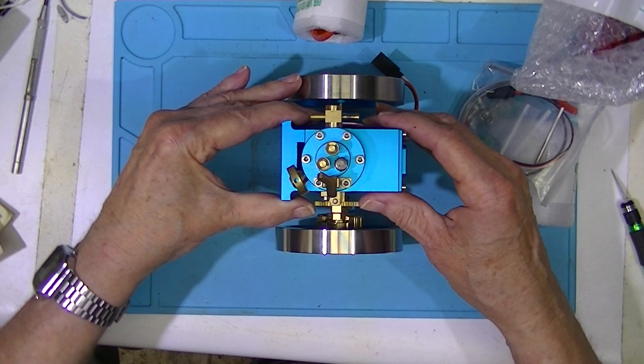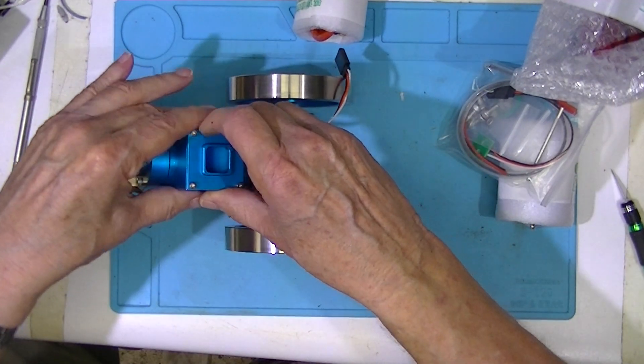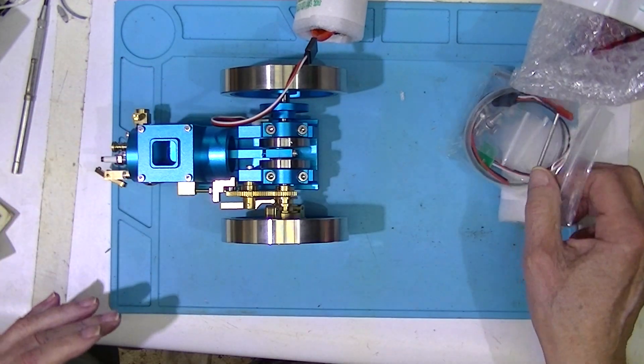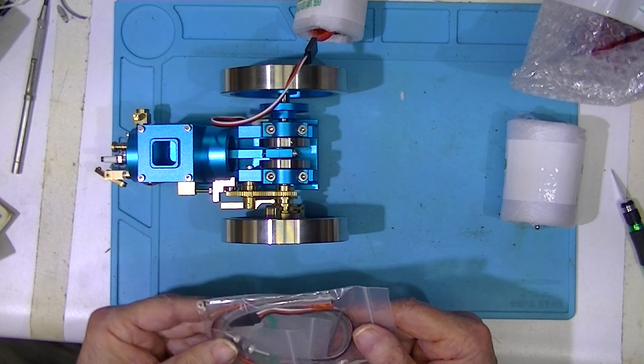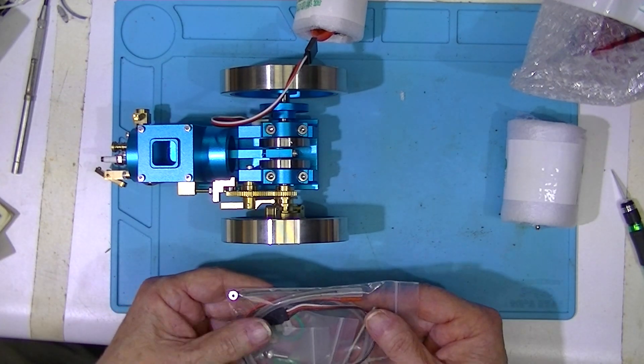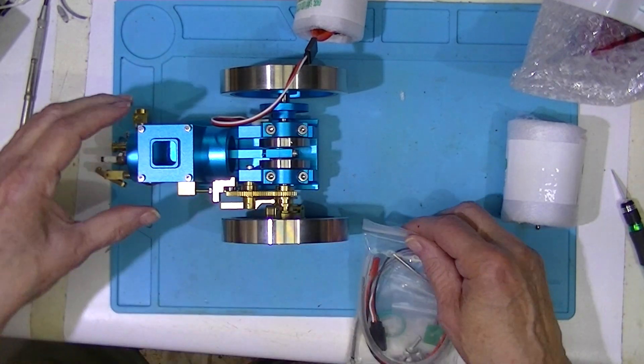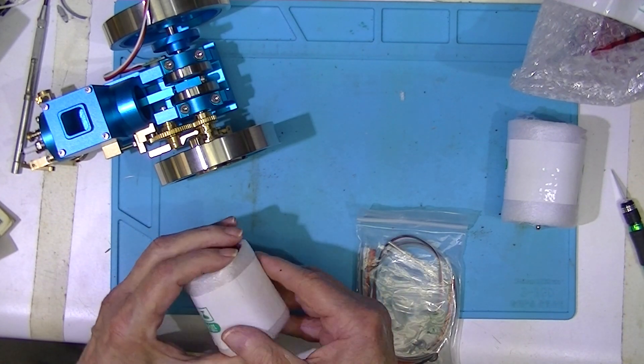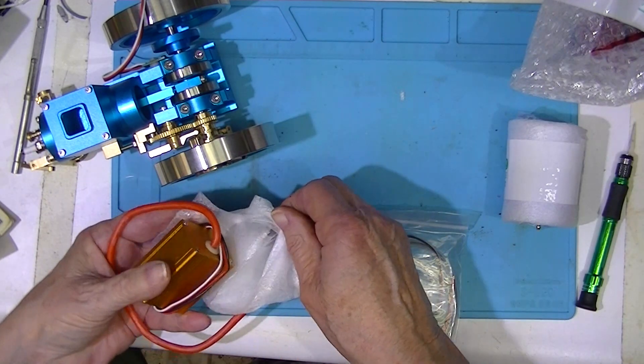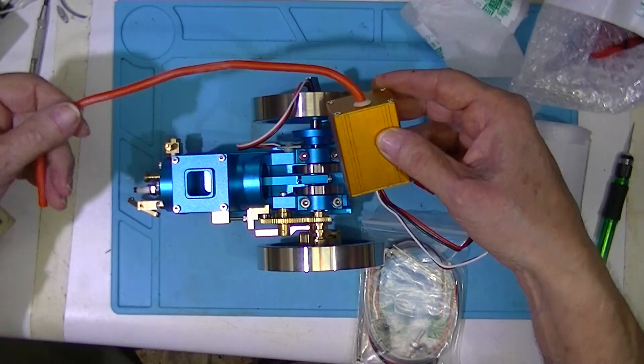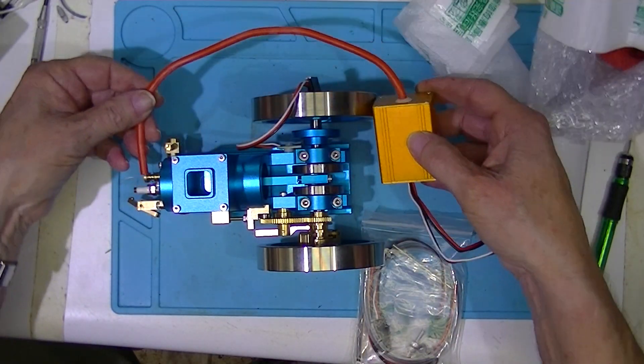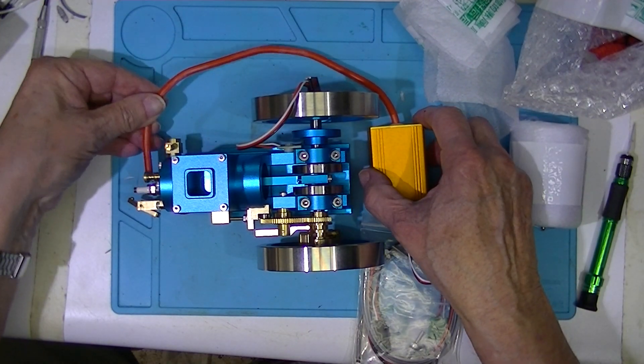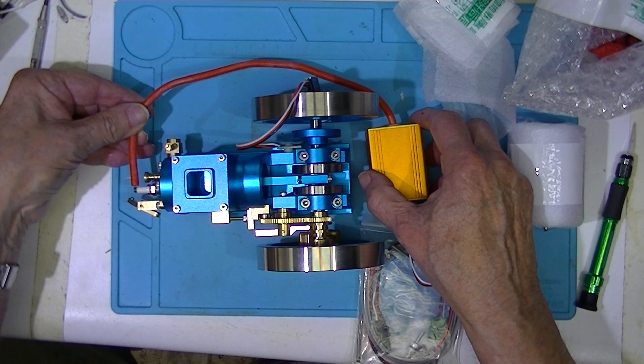The push rod is in here. This is the ignition unit that provides a high tension spark. It mounts under or behind the engine, and the spark comes up and attaches to the spark plug.